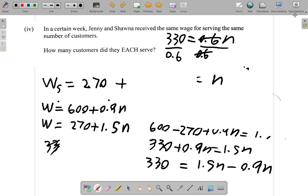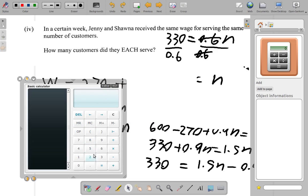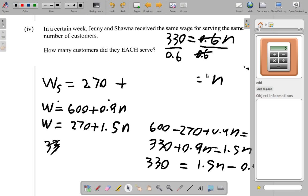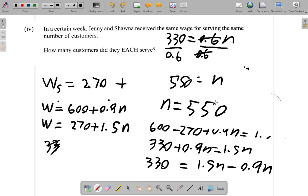330 over 0.6. 330 over 0.6 gives 550. So the number of customers is equal to 550. I just rewrite it so that the N is on the left and the answer is on the right. How many customers did they each serve? Well, my answer here is that they serve 550 customers.